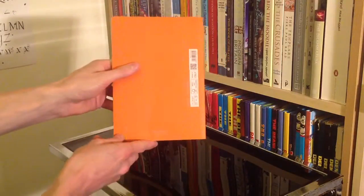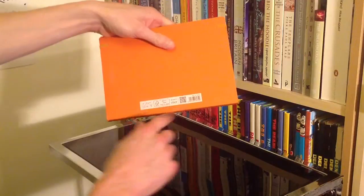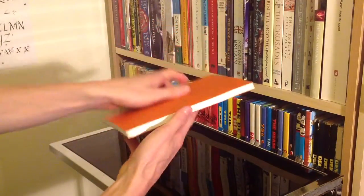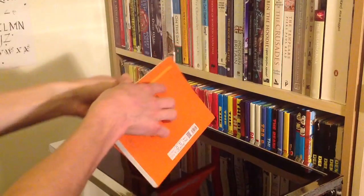If we flip it around to the back, you can see Fabriano made in Italy and the general information. If we pop this open and have a quick look inside, these are cardboard covers on the front and back.